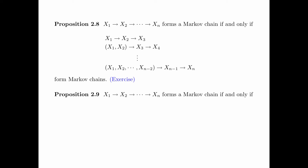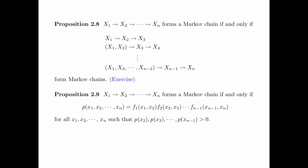Proposition 2.9 says that x1, x2, ..., xn forms a Markov chain if and only if p(x1, x2, ..., xn) can be factorized as f1(x1, x2) · f2(x2, x3) · ... · fn−1(xn−1, xn) for all x1, x2, ..., xn such that p(x2), p(x3), ..., p(xn−1) is positive. Note that Proposition 2.9 is a generalization of Proposition 2.5 that we have seen before.